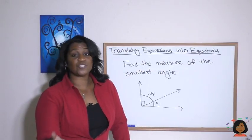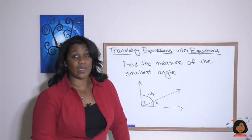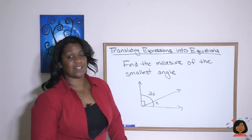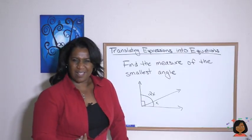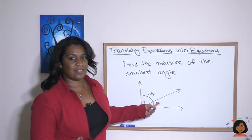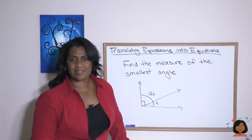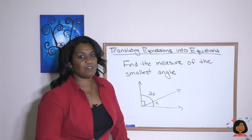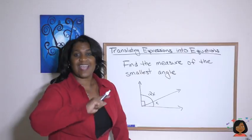We also can translate expressions into equations with some geometric shapes. So we know that we've got an angle here. It's a right angle. And they're telling us that one part of their angle is X. The other is 2X. How do we find the degrees of the angle? We know that a right angle equals 90 degrees.